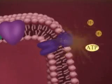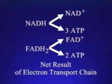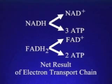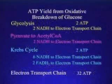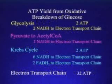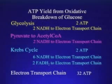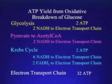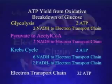Each NADH yields three ATPs. FADH2 yields two. The electron transport chain greatly increases the yield of ATP from the breakdown of glucose. Only four ATPs result from glycolysis and the Krebs cycle. Electron transport yields 32 more.